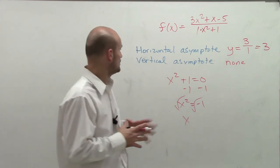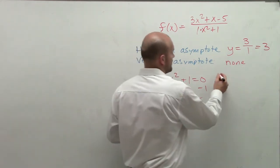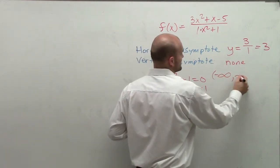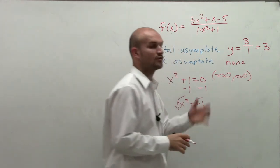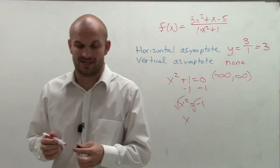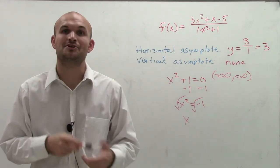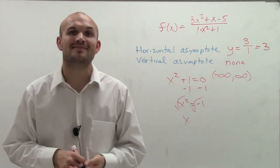So we're not going to have any vertical asymptotes. Therefore, our domain is going to be all real numbers, so from negative infinity to infinity. So there you go, ladies and gentlemen. That's how you do the horizontal and vertical asymptote. Thanks.